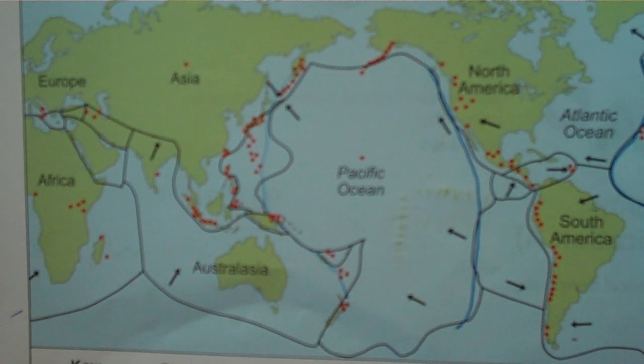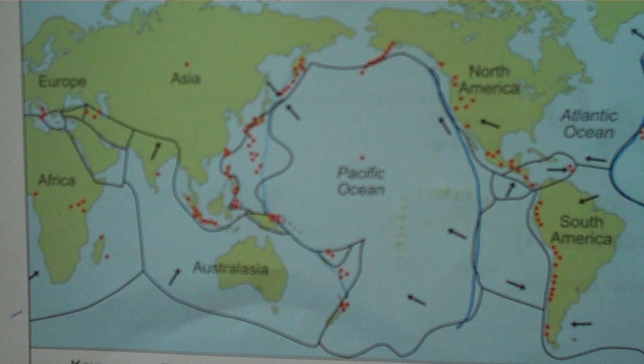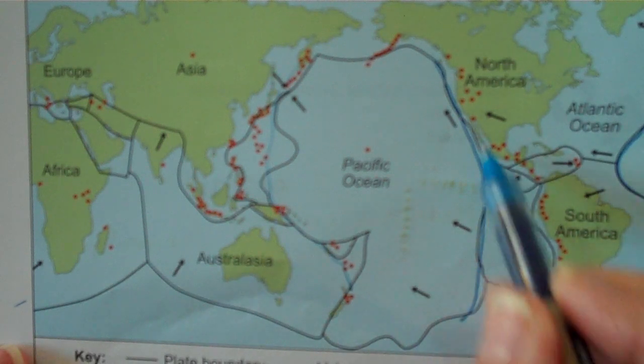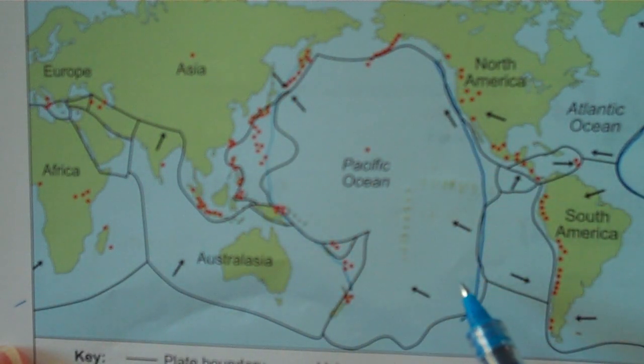The Mid-Atlantic Ridge is where the Eurasian Plate and the North American Plate pull apart. Another big belt is round the Pacific Ocean, also known as the Ring of Fire.